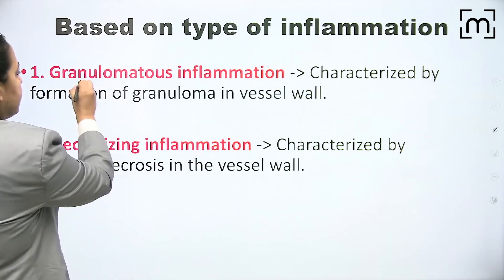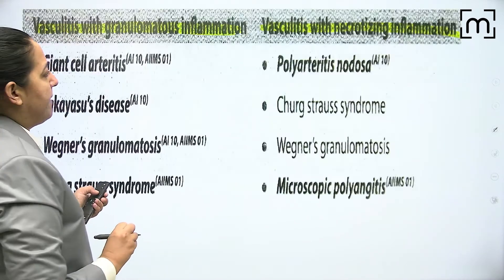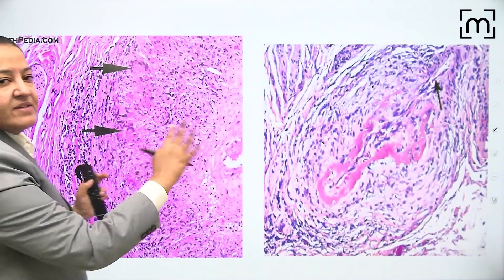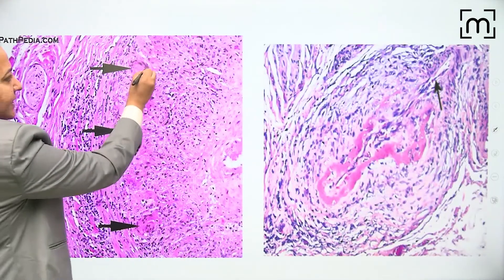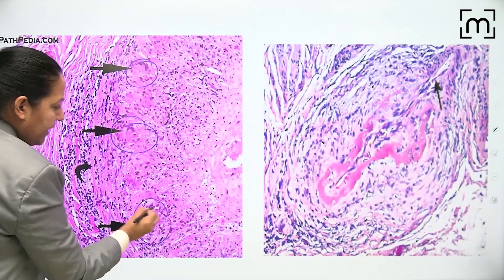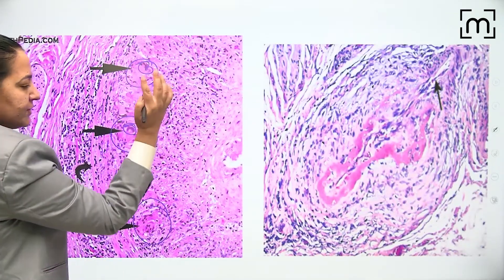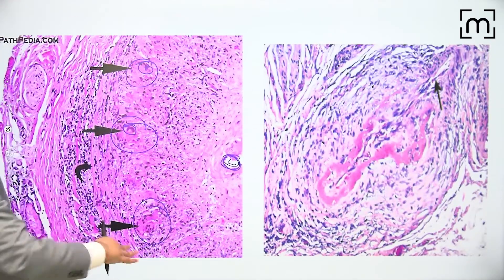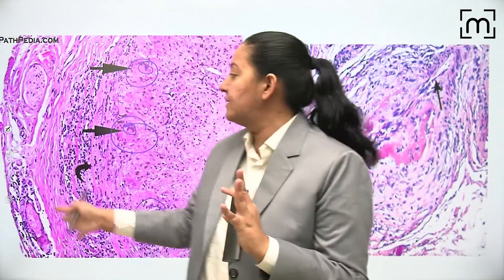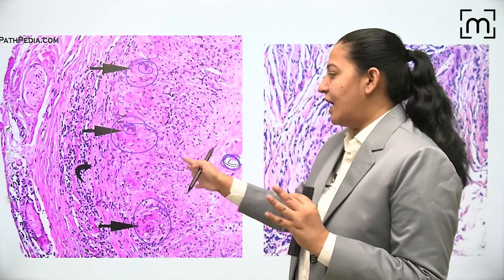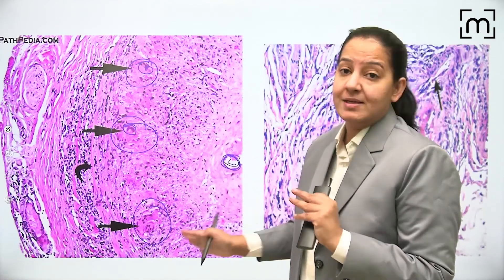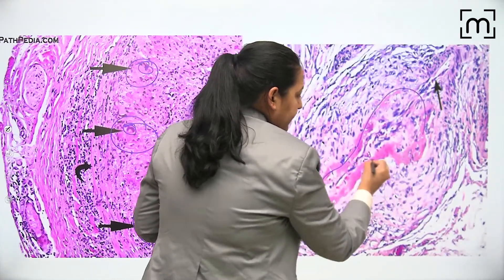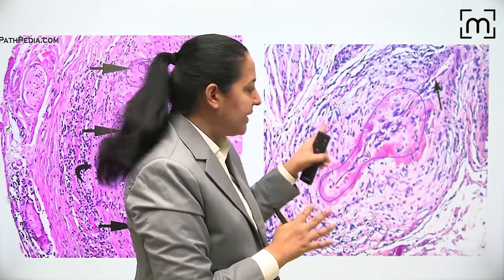Please appreciate the two types of inflammation in the wall of the blood vessel in these diagrams. In granulomatous vasculitis, you can appreciate granulomas in the media with giant cells inside them. This is the lumen, this is the intima, and in the media you can appreciate multiple granulomas with giant cells. This type is called granulomatous vasculitis.